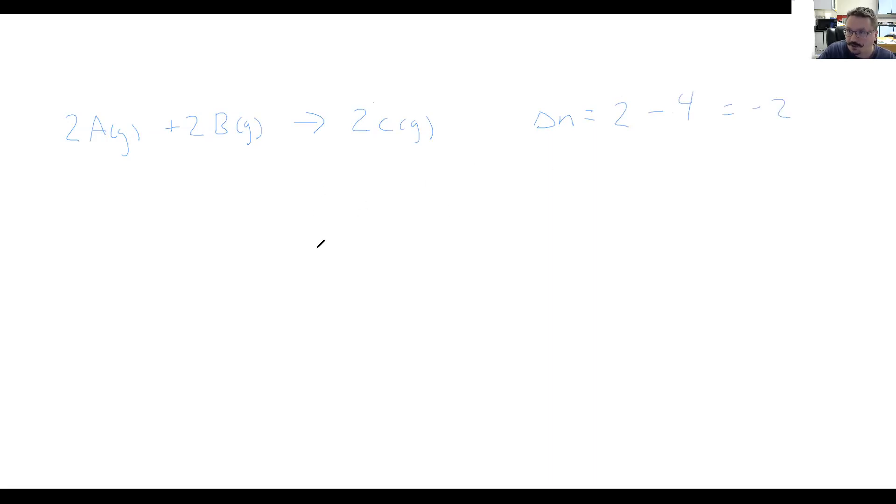So again, how to treat that? We're going to have to do, in that case, we'd have RT raised to the negative 2. That would look like this, 0.08206 times 298 Kelvin, if this were at 25 degrees, because it's raised to the negative 2. That is the exact same thing as saying 1 over this squared. So if you had 2 raised to the negative 2, what is that really? It's 1 over 2 squared, or 1 over 4.